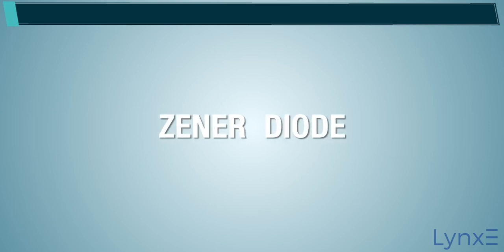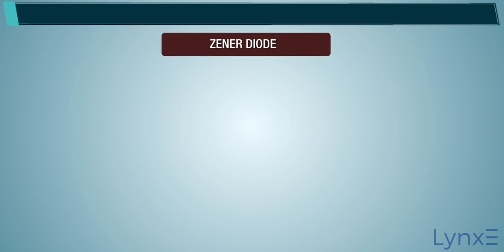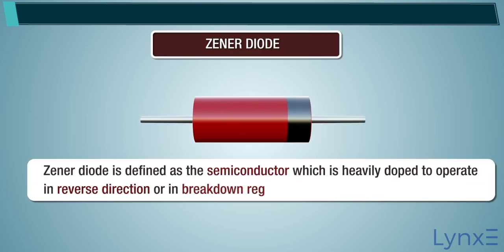Zener diode is defined as the semiconductor which is heavily doped to operate in reverse direction or in the breakdown region.